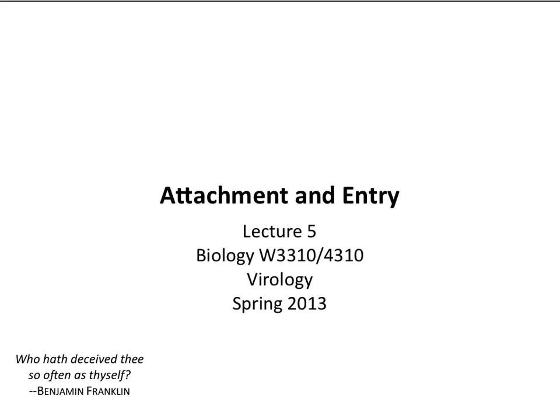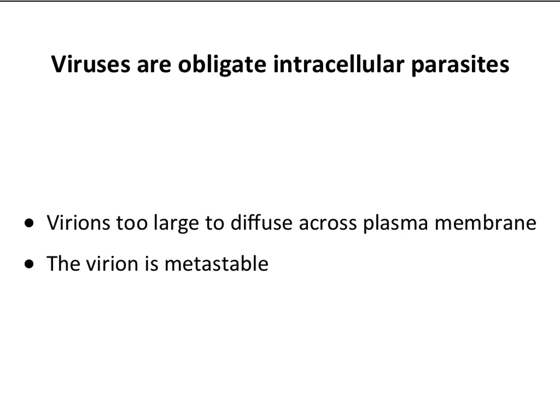Today we're talking about getting into cells — attachment and entry. The problem here is that viruses need to get into cells to replicate. They're obligate intracellular parasites, but they can't simply diffuse through the membrane; they're too big. So there have to be active ways that viruses are taken up into cells. The other part of the equation is that virions are metastable: stable in the environment, but on some cue they come apart and give up their genome. That metastability plays a big role in today's discussion.